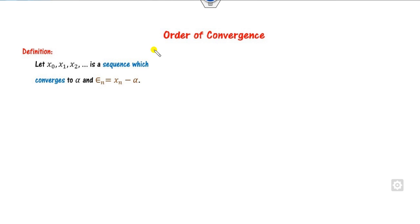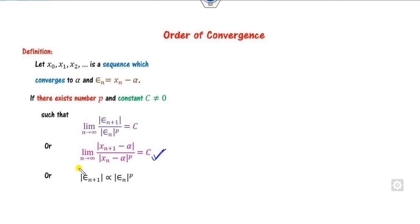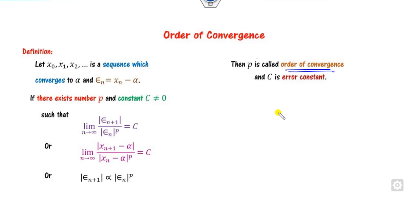Based on this error term, we can define the order of convergence. The definition is: if you have a sequence of real numbers which converges to alpha, and if there exists a real number p and a constant c such that the ratio of the (n+1)th error to the nth error raised to power p converges to c, then p is called the order of convergence. And c is called the asymptotic error constant — we call it asymptotic because the value of c is obtained as n approaches infinity.